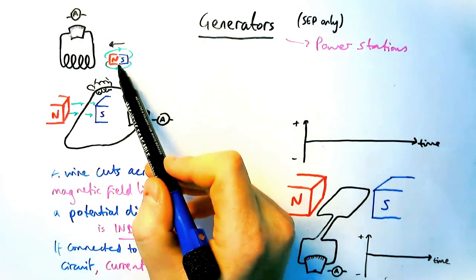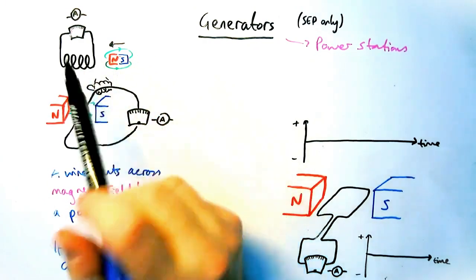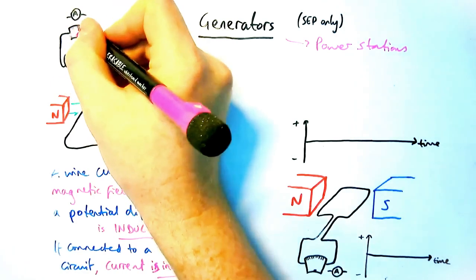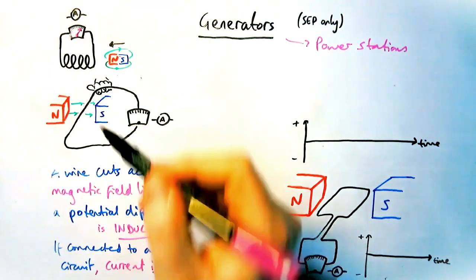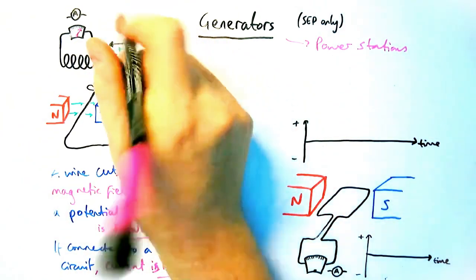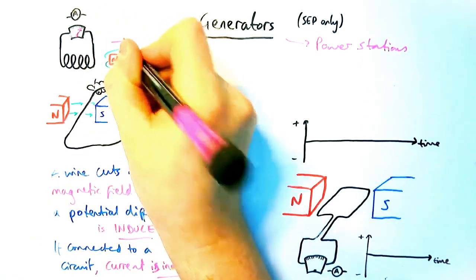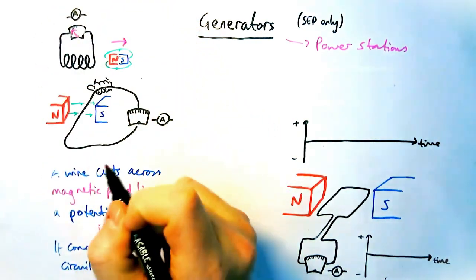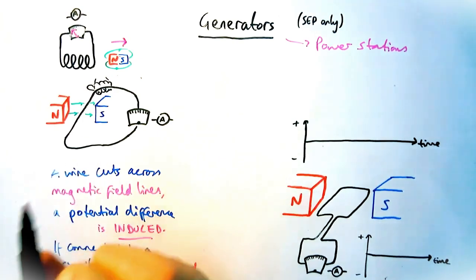When we move a magnetic field towards it, there is a PD induced that, because it's connected to the circuit, causes there to be a current. So the dial will move to the right. If we are to pull it back out, the current will reverse into the opposite direction. So it will go to the left. When there's no movement, there's no current.